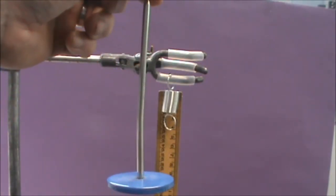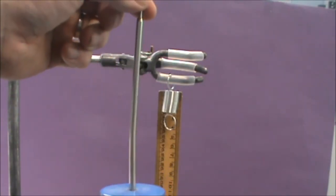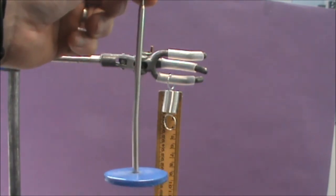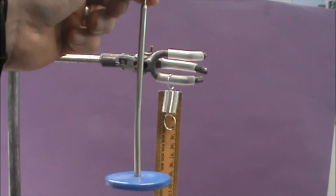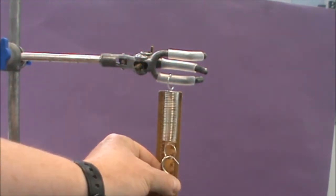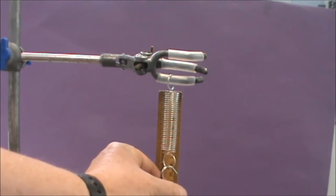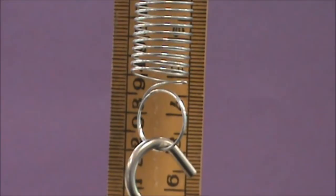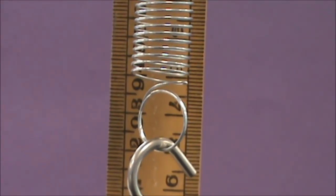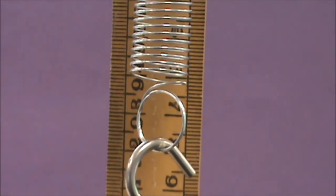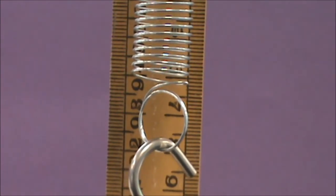The first thing that we have to do is add a mass hanger to the spring. This mass hanger has a mass of 100 grams which is a weight of 1 newton. So we add it on to our spring and then we need to read the measurement off the spring. So here we are with just 100 grams or 1 newton on it and we can see that the spring now has a length of 6 cm.